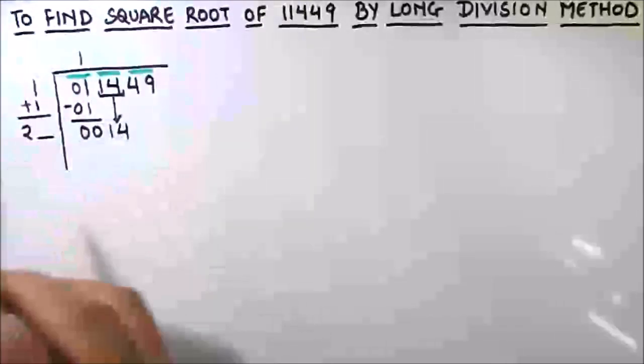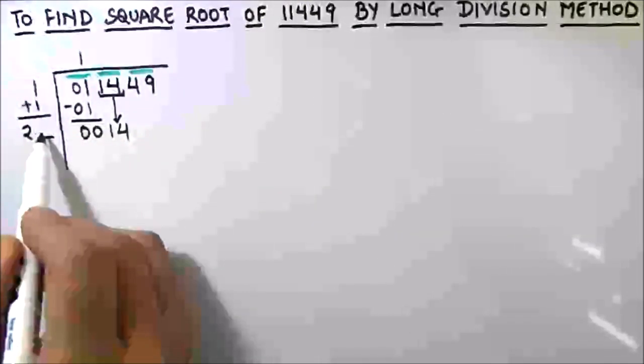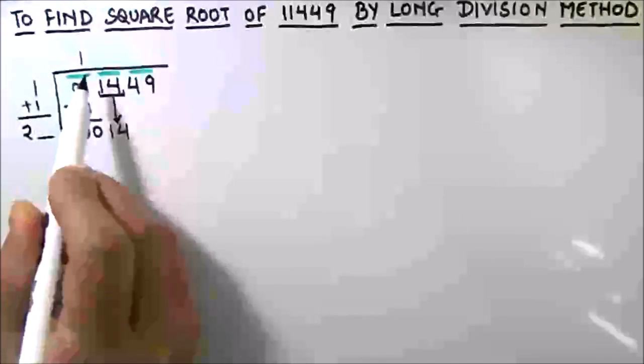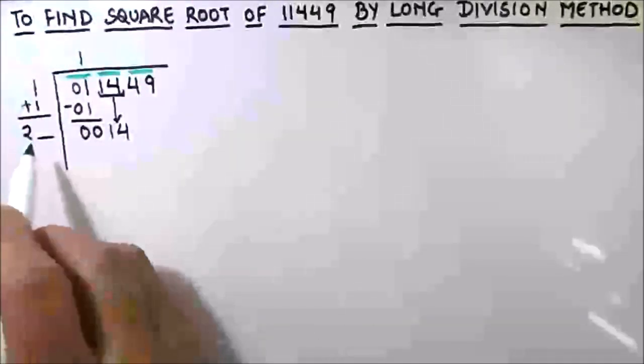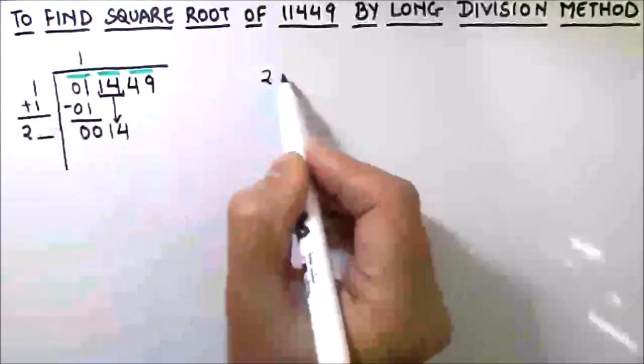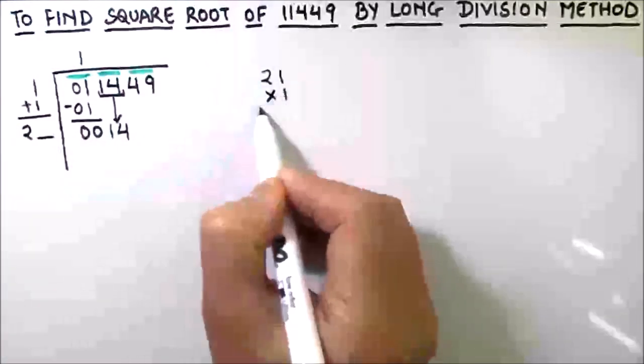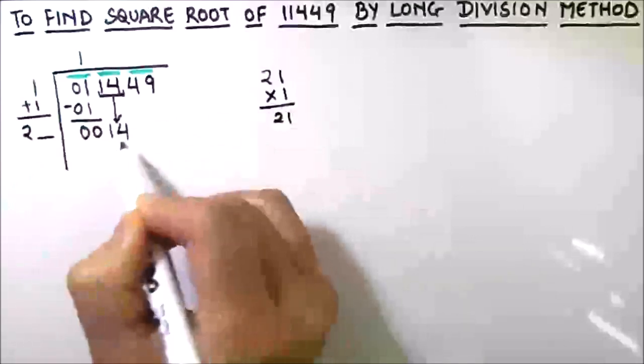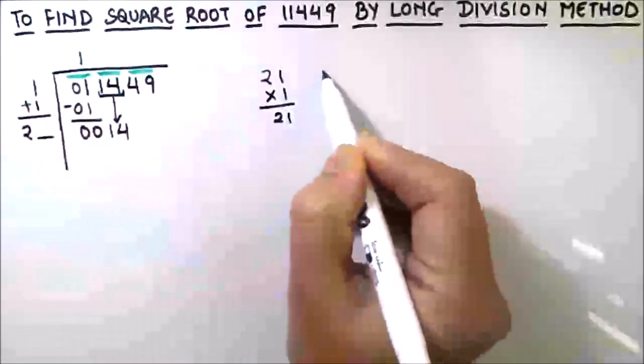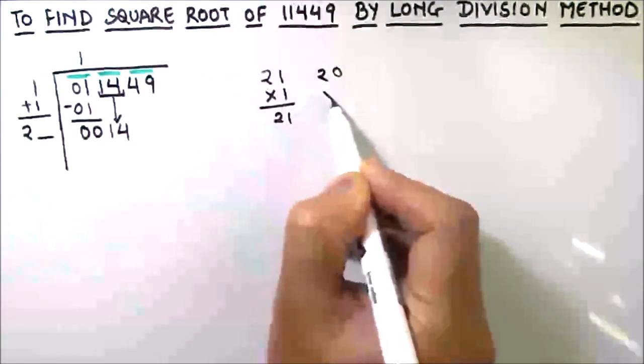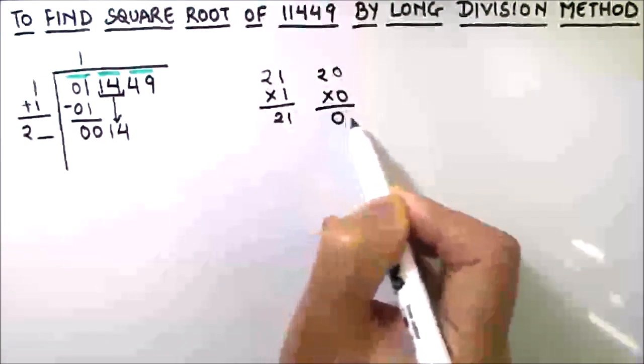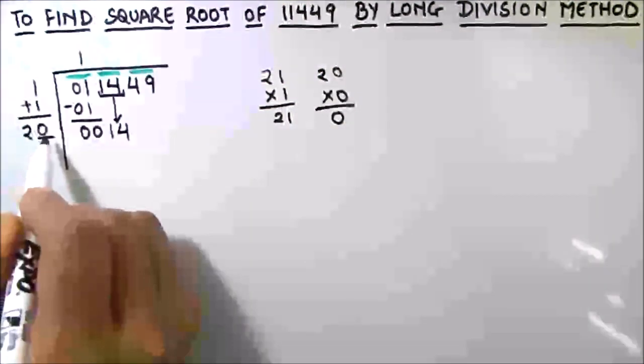Now here we have to annex such a number whose product with the same number gives the result as 14 or less than 14. So now we already have two. If we'll add one and multiply it by one, we'll get 21, which is more than 14. So the only number we can add in front of two is zero.